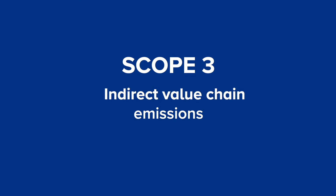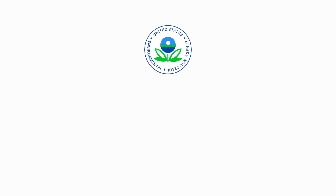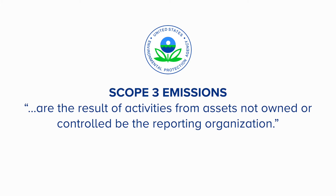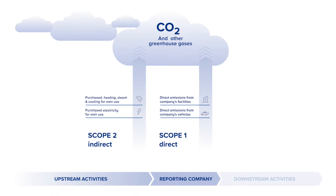Lastly, we come to Scope 3 emissions, the indirect value chain emissions of a reporting company. According to the US Environmental Protection Agency, Scope 3 emissions are the result of activities from assets not owned or controlled by the reporting organization. These emissions can represent the largest portion of its greenhouse gas emissions inventory and are the most challenging ones to calculate. The GHG Protocol divides Scope 3 emissions into upstream and downstream emissions.